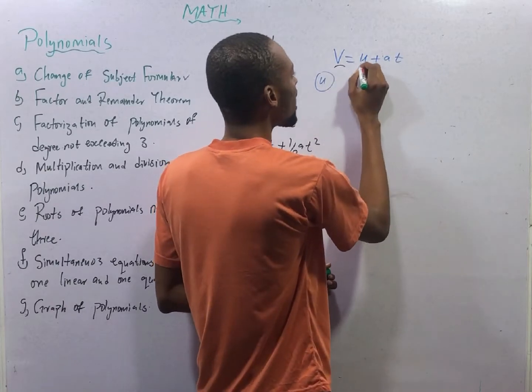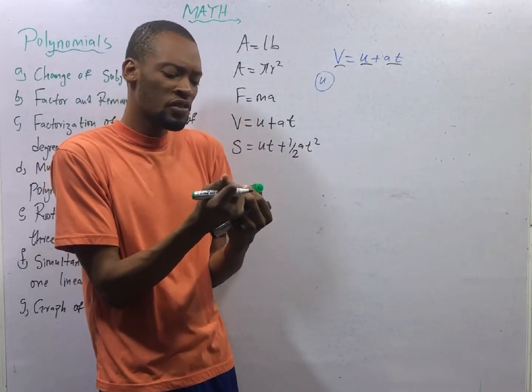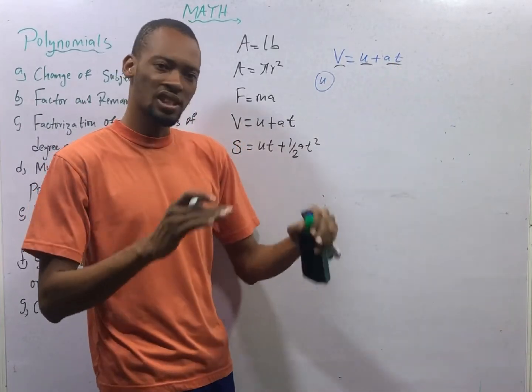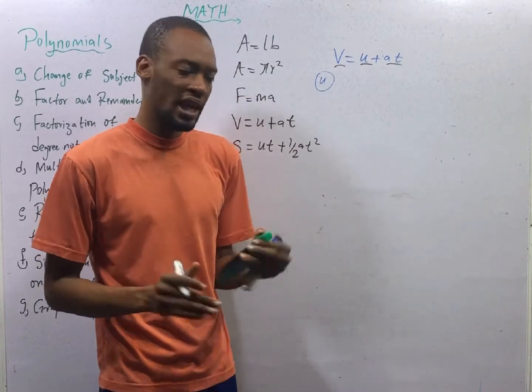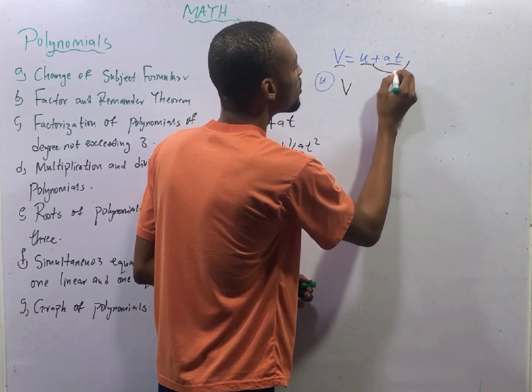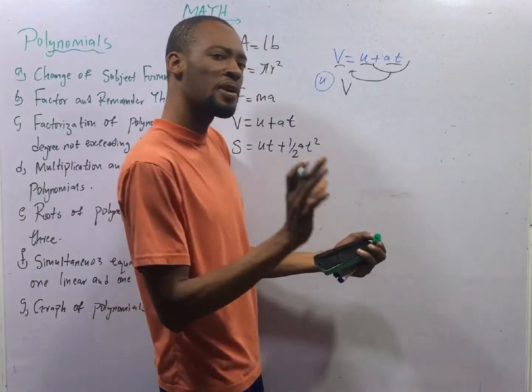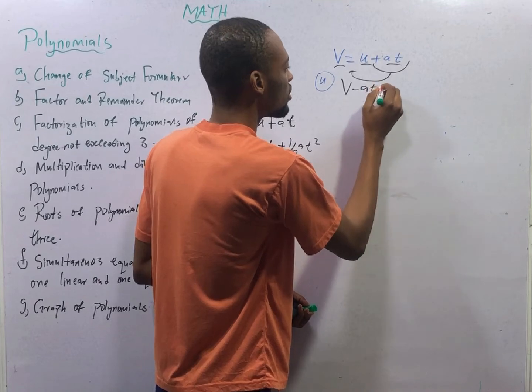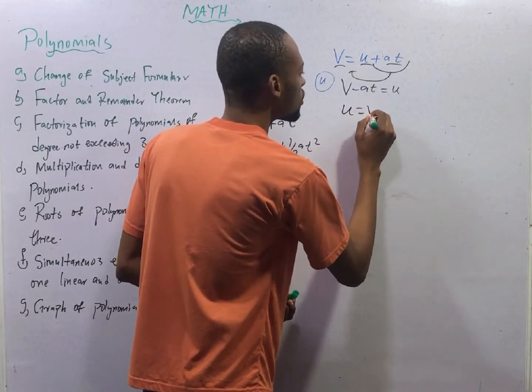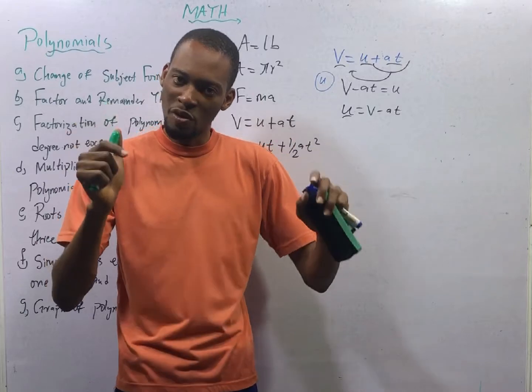We have V, we have U, and we have AT. AT is a combined variable, combined value. Anytime two values are combined, you move them together. You can't just remove one. The only thing you can do to remove one from a multiplied value or combined value is dividing. Apart from division, you cannot just pick A and remove like that. If we are collecting like terms, here is V plus U, AT, everything, we have to move this way. And if plus AT moves, crosses the equality sign, it will definitely become a minus to give us V minus AT equals U. If V minus AT equals U, it means that U equals V minus AT. U is now the subject formula. What have we done? Change of subject formula.